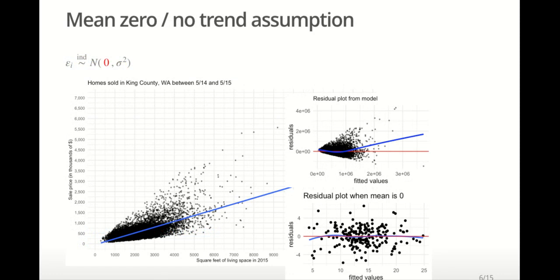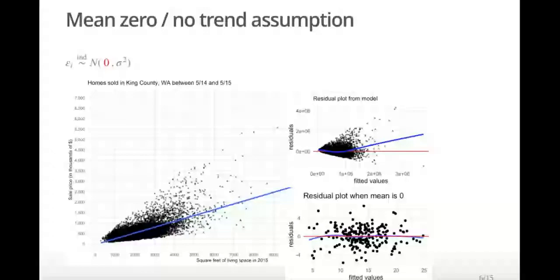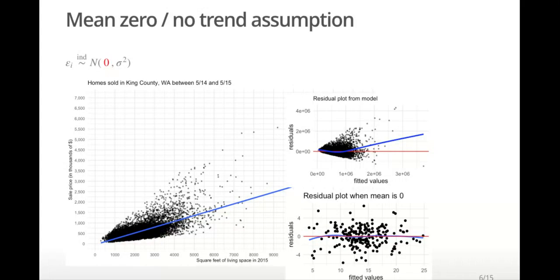The assumption of the mean of the residuals always being zero also means that the y's are a linear combination of the predictors, the x's. We will often see violations of this assumption when the true relationship between the predictor and response is a curve of some sort rather than linear. Violations of this assumption can lead to inaccurate predictions.